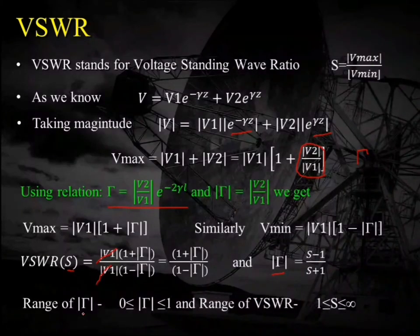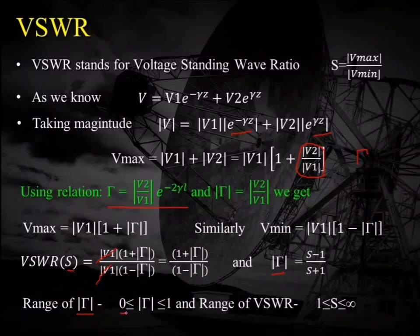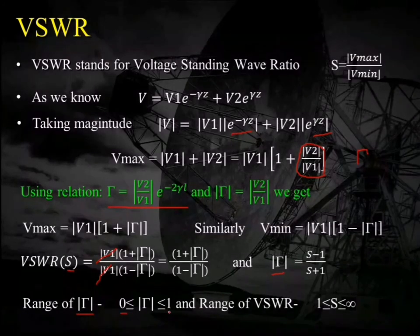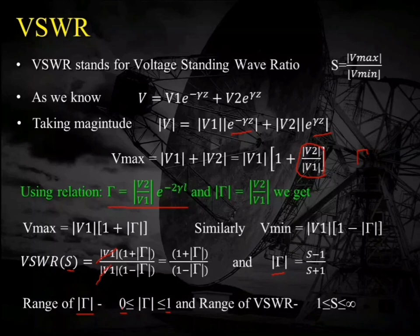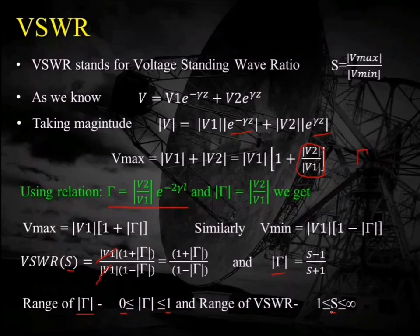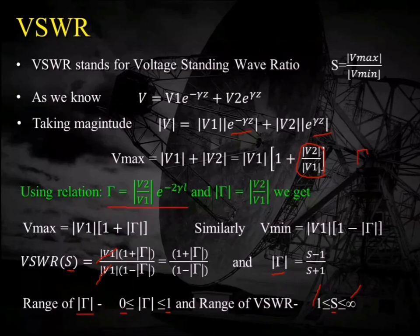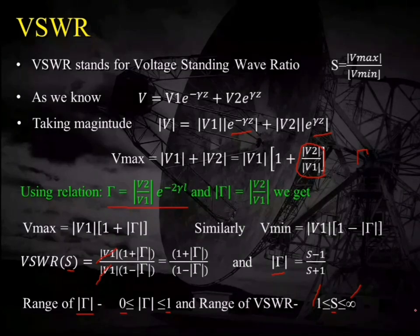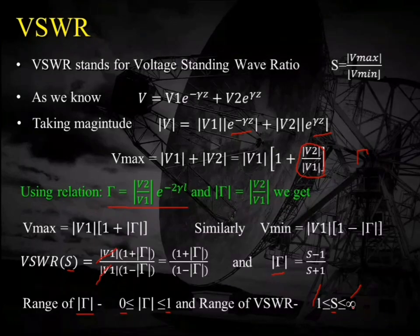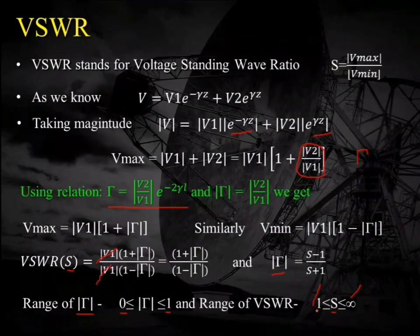The magnitude of the reflection coefficient ranges from 0, in the matched case where ZL equals Z0, to a maximum of 1. Substituting these values into the VSWR formula, the VSWR has a minimum value of 1 in the matched case and a maximum value of infinity when the system is totally unmatched.